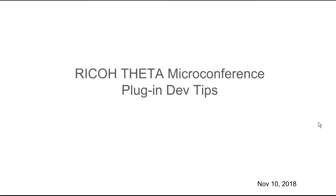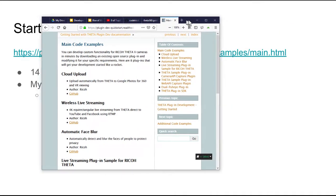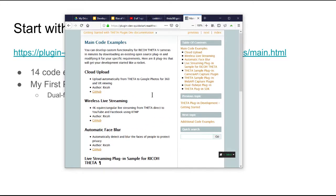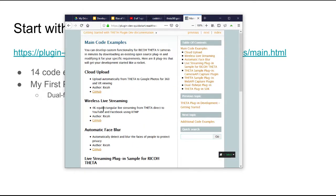Hi, I know you guys are itching to get access to the cameras and start using them — bust out your developer kits or start working in groups. I'll just have a few slides here to give you a push in the right direction. The main thing is this quick start guide, which has 14 code examples. The suggestion is that you get one of the code examples, compile it, and start running with it.